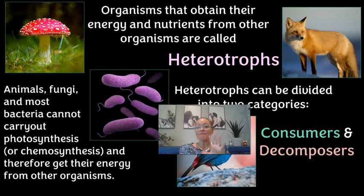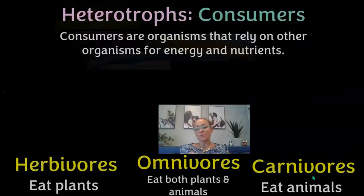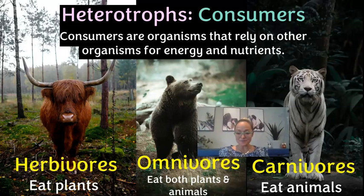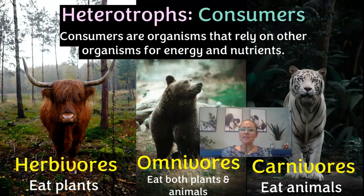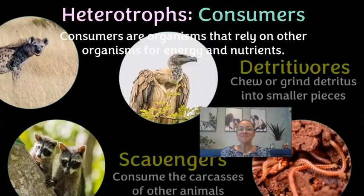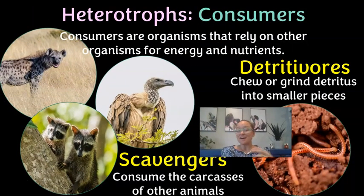Heterotrophs are divided into two categories: consumers and decomposers. Among consumers, there are five types. Herbivores eat plants, omnivores eat both plants and animals, and carnivores eat only animals — even a spider counts as a carnivore because it eats other insects. Omnivores could be something like a mouse that eats seeds and nuts but also insects. Scavengers consume the carcasses of other animals and are generalists that eat a wide variety of foods.